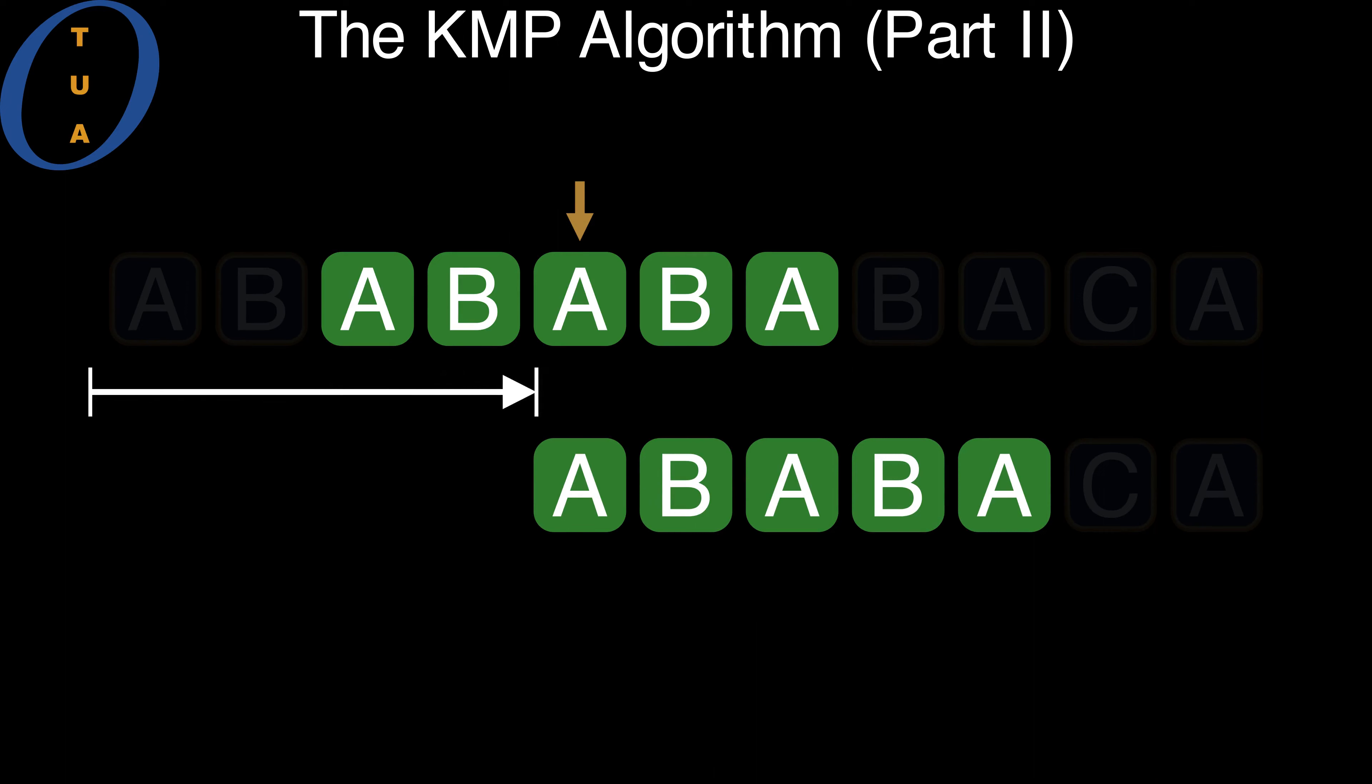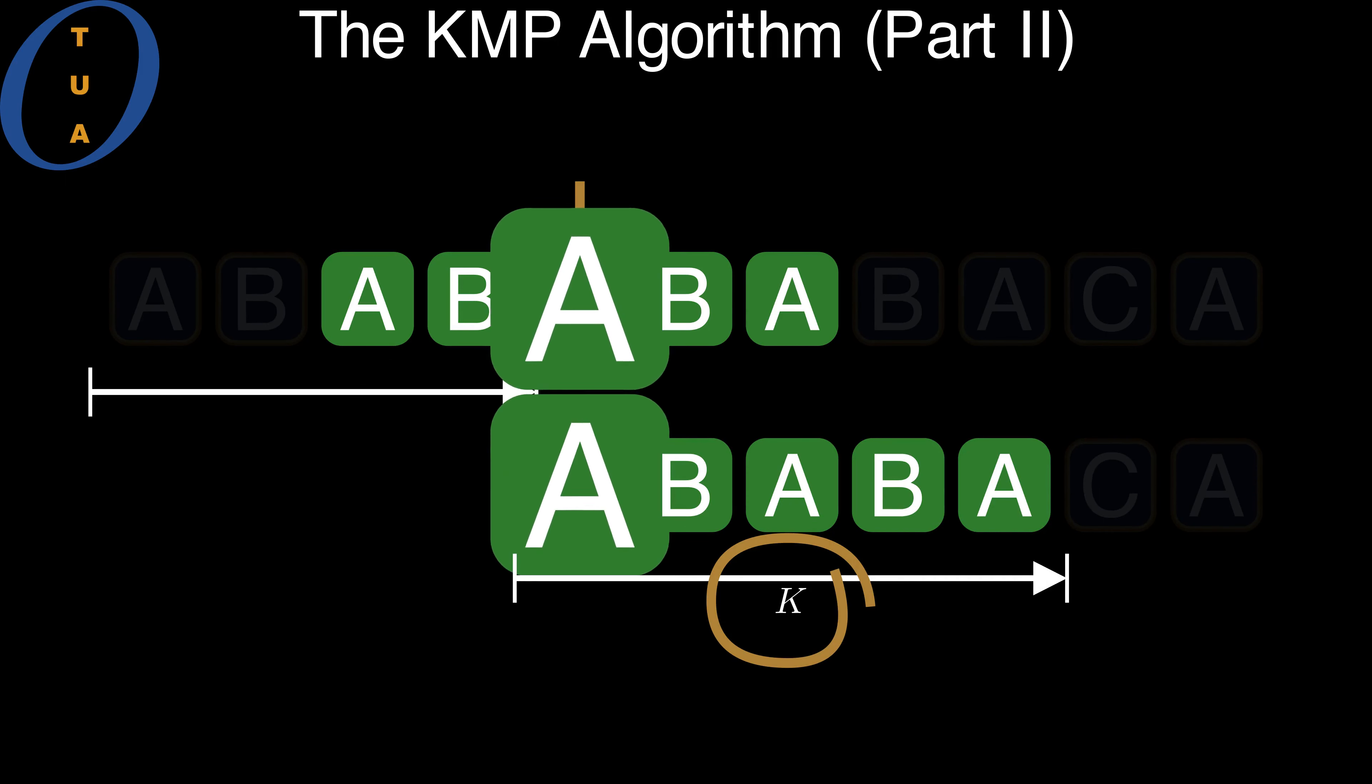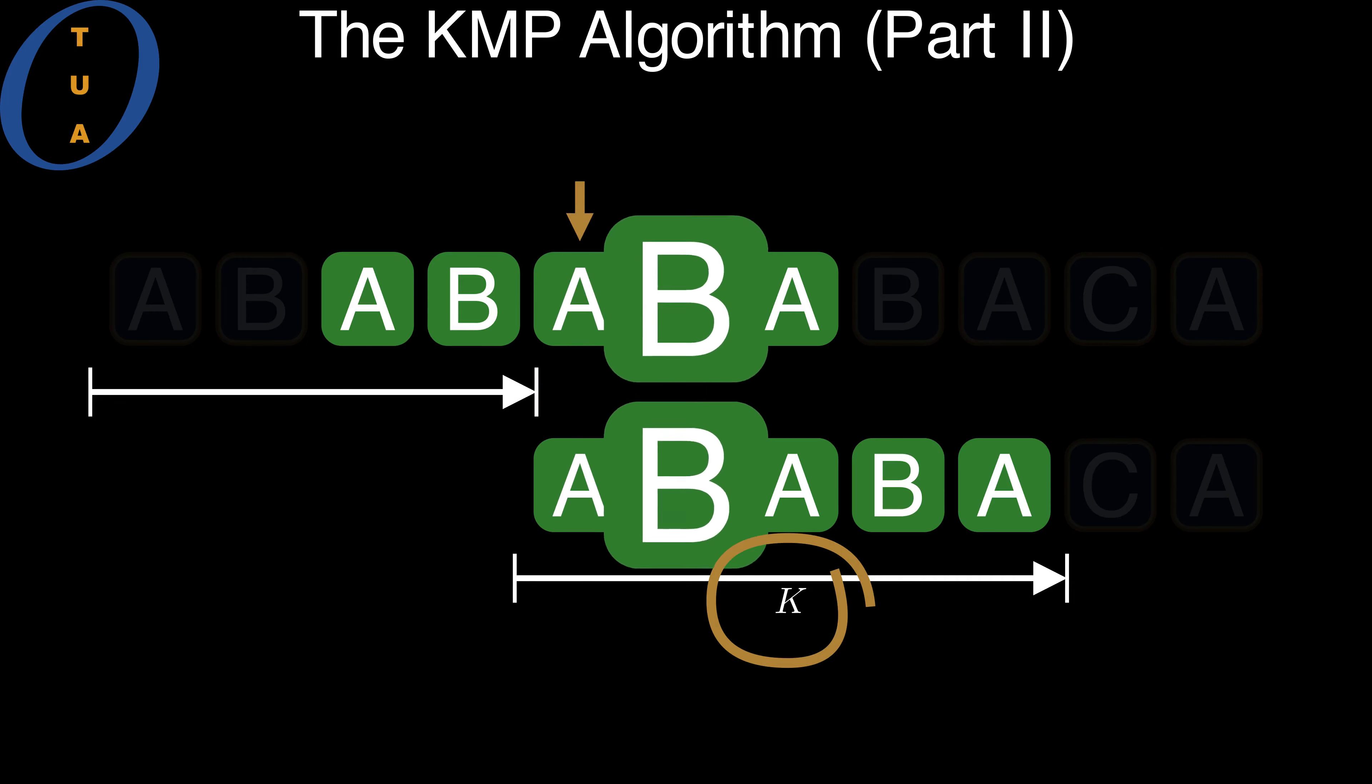Once the new offset is computed, we also need to update the value of K, which recall is the number of symbols known to match at the current offset.